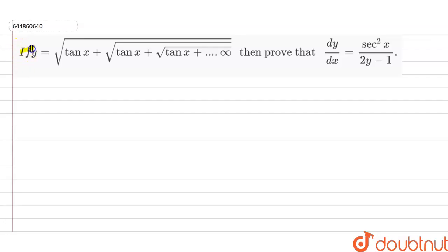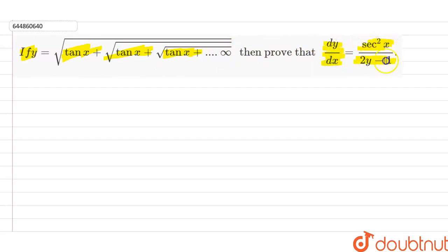Our question is: if y is equal to the square root of tan x plus the square root of tan x plus the square root of tan x, up to infinity, then prove that dy/dx is equal to sec²x upon 2y minus 1.